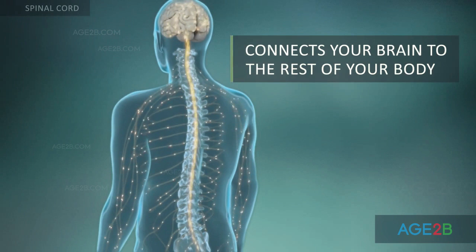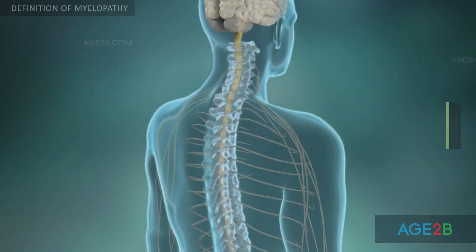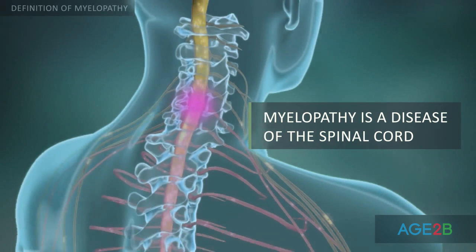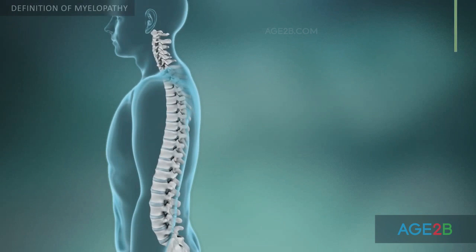The spinal cord serves as the communication system between the brain and the body, carrying messages about movement and feeling. If a disorder or injury interrupts or disturbs the way neural signals are transmitted through the spinal cord, a condition called myelopathy occurs.